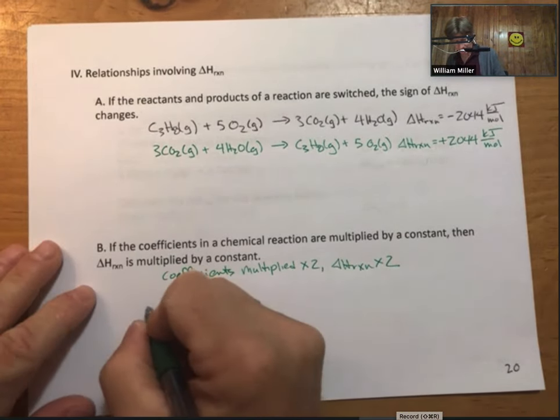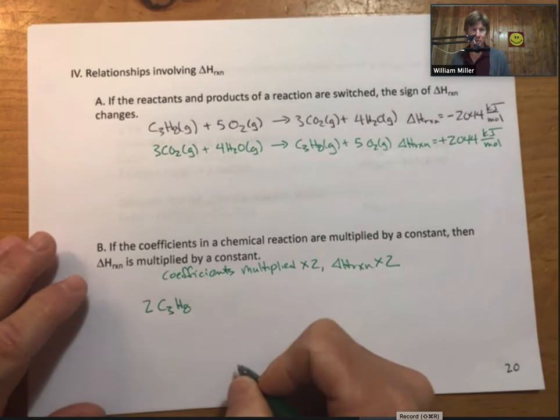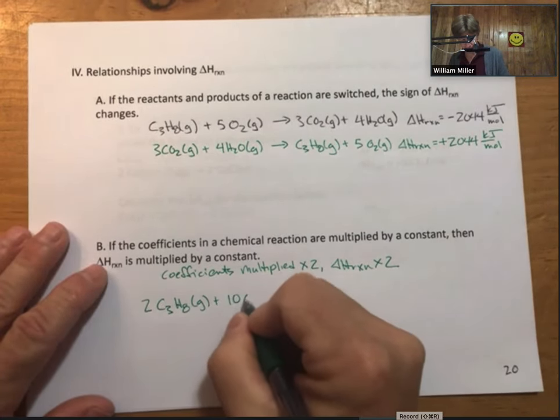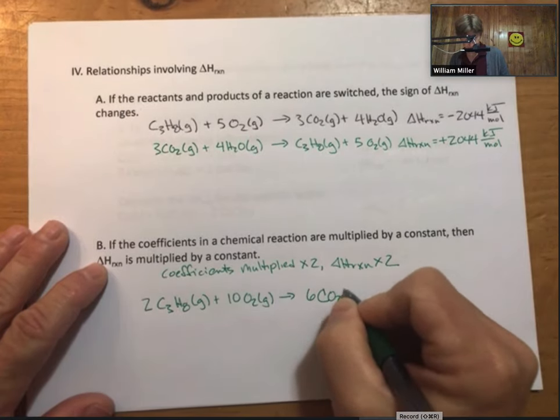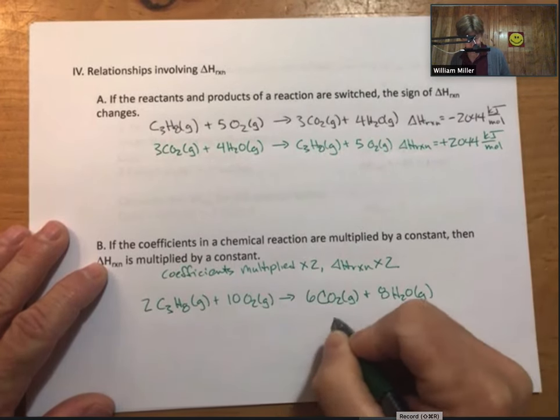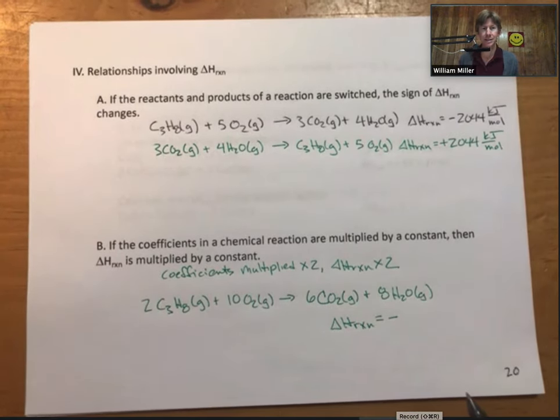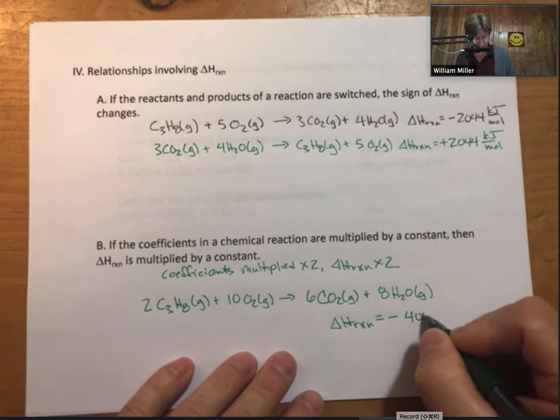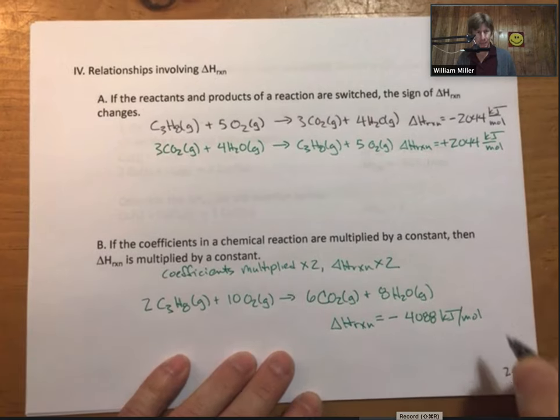delta H is multiplied times 2 as well. So now we'll go to 2 moles of propane plus 10 moles of oxygen, and delta H from this top one is minus 4,088 kilojoules per mole.